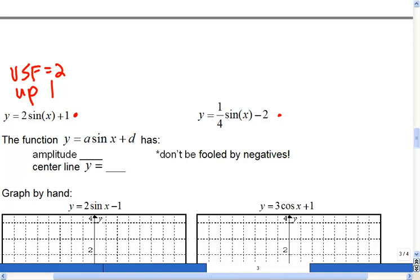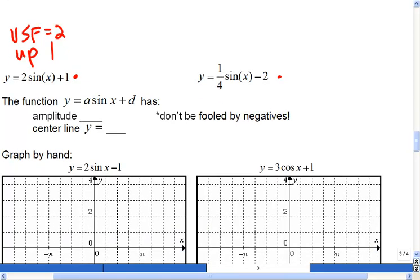For this first one, we would move up by 2. Sorry, it would be vertical stretch 2 and up 1. So we've already said this is going to move the center line up by 1. What do you think is going to happen in terms of, use some trig language, what's going to happen to this graph if the vertical stretch factor equals 2?